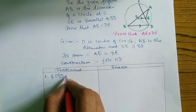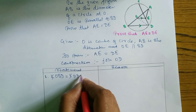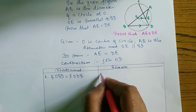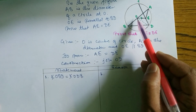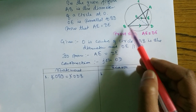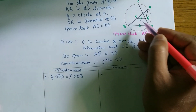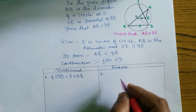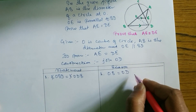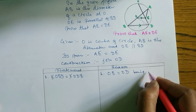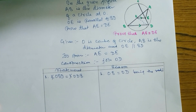Statement 1: Angle OBD is equal to angle ODB. The reason is that OB and OD are equal — both are the radius of the circle.